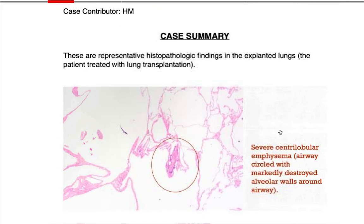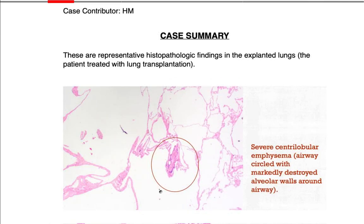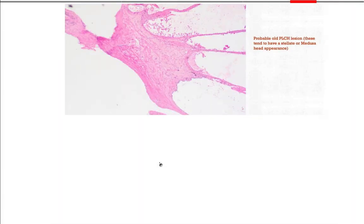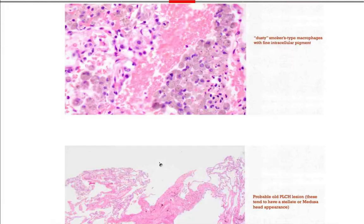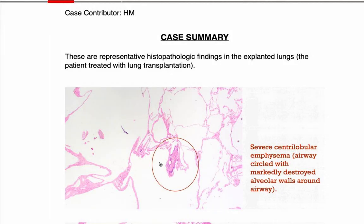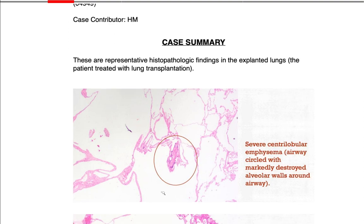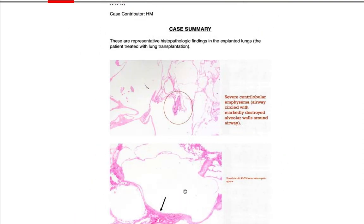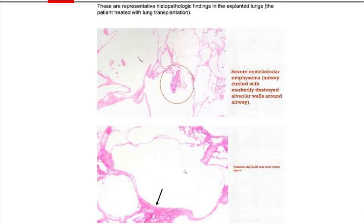Did the pathologist comment about vascular remodeling? Sometimes they get bad pulmonary hypertension. Not in the slides I got. Those stellate lesions are really nice. They're really nice images.